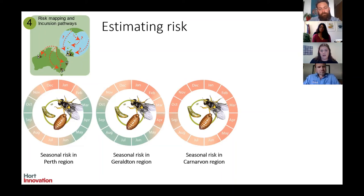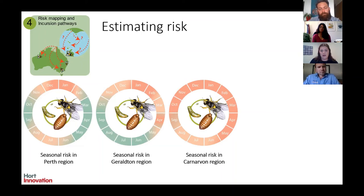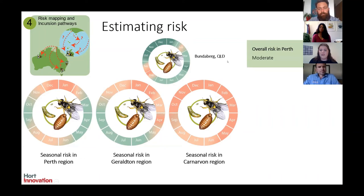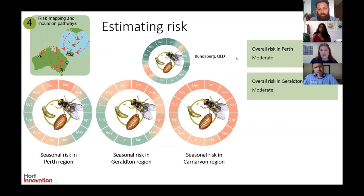Comparing these regions to Bundaberg in Queensland — considered very high risk for vegetable leaf miner — shows significantly darker green in the summer period, whereas Western Australian regions show only moderate green. Overall predicted risk is moderate for Perth, moderate for Geraldton, and low for Carnarvon. You can explore this interactive tool online at the site provided.